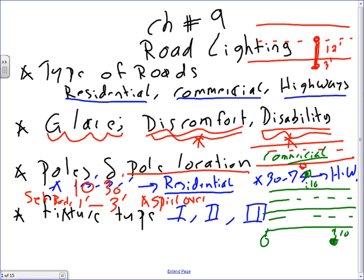We have residential, commercial, and highways. The second thing to be aware of when it comes to streets is glare — discomfort and disability. When you're driving on interstate highways, I'm sure you've seen floodlights that blind you, especially on country roads when someone's high beams are on and it blinds you. When designing a lighting system for highways and streets, factor number one is glare. There are two types: discomfort glare, which makes me uncomfortable while driving, and disability glare.